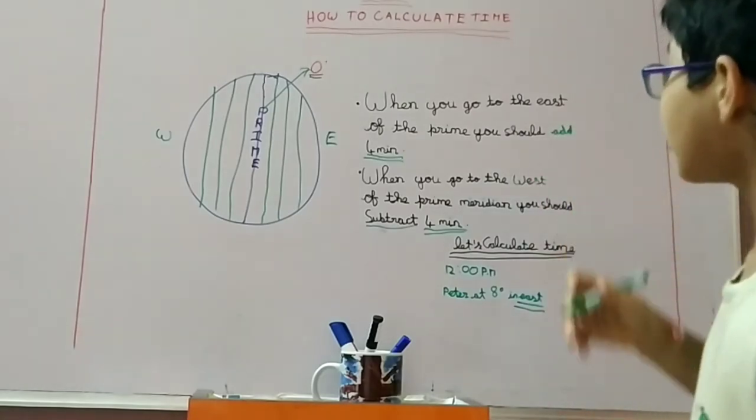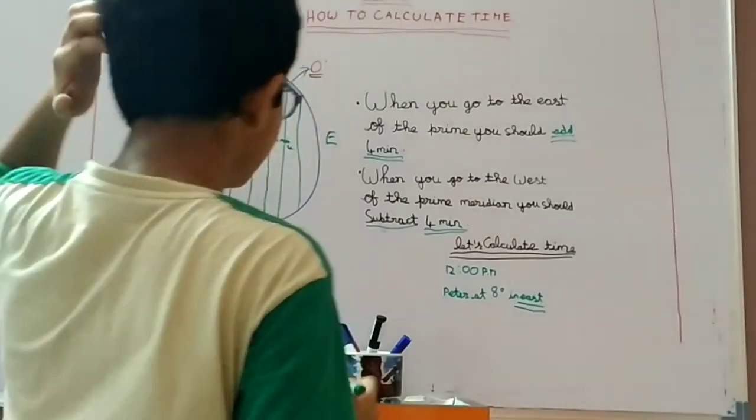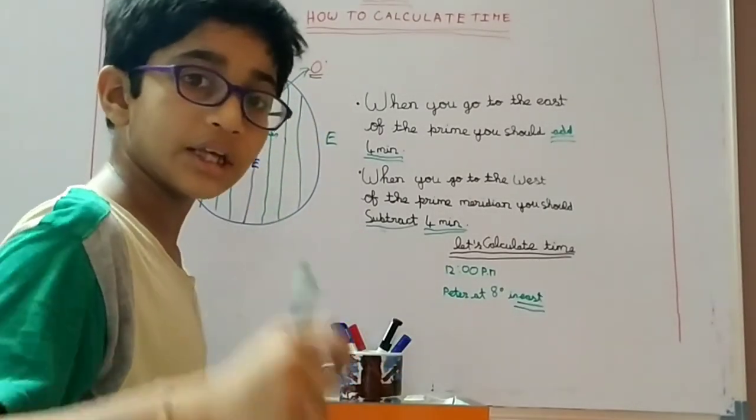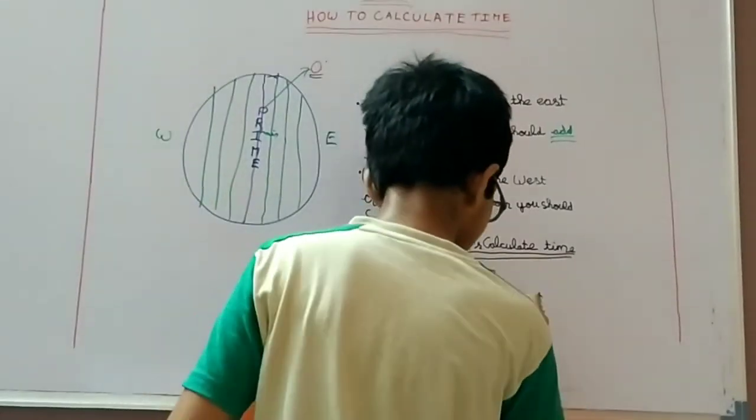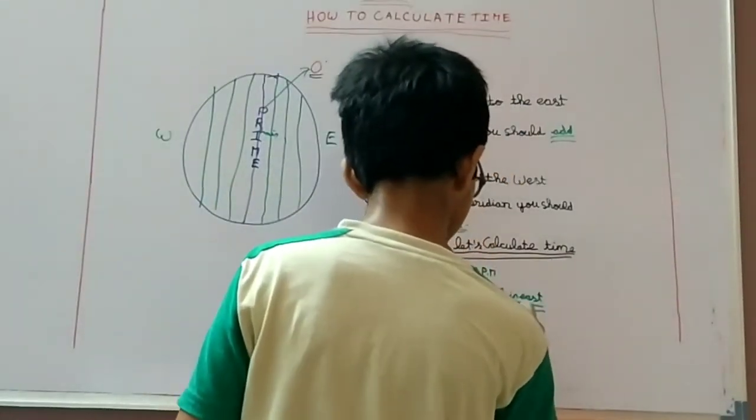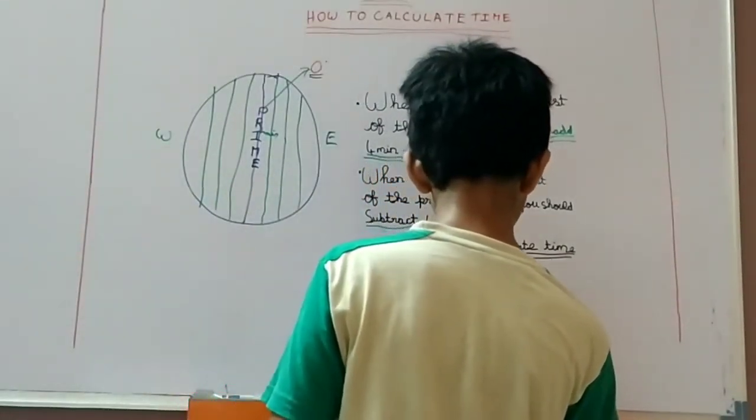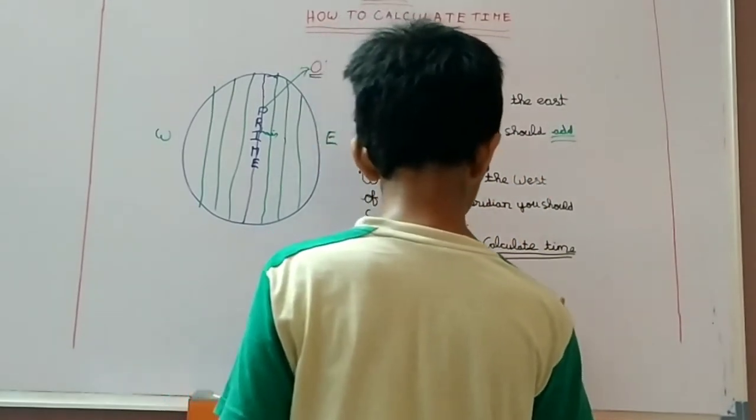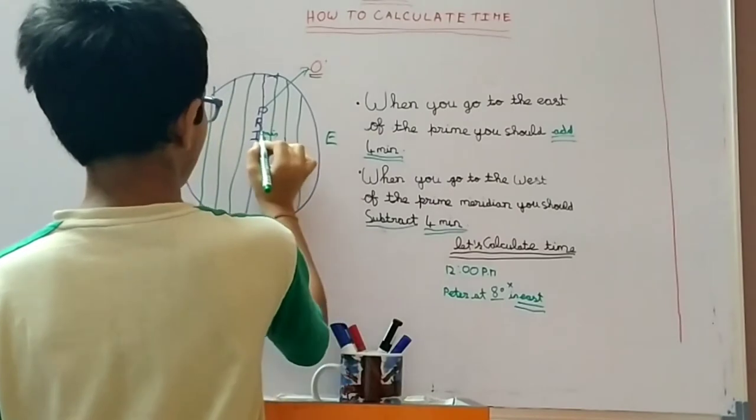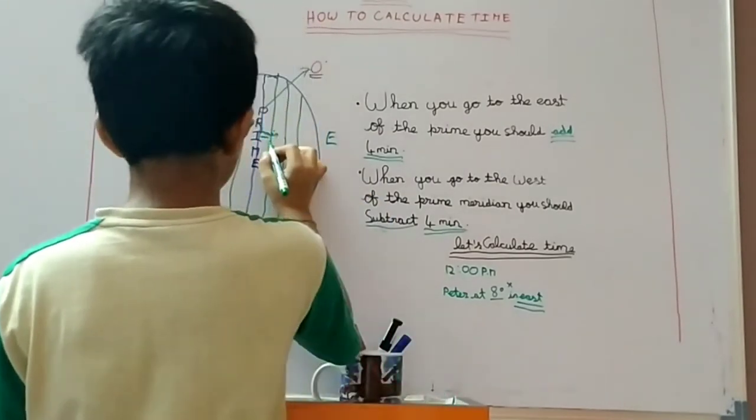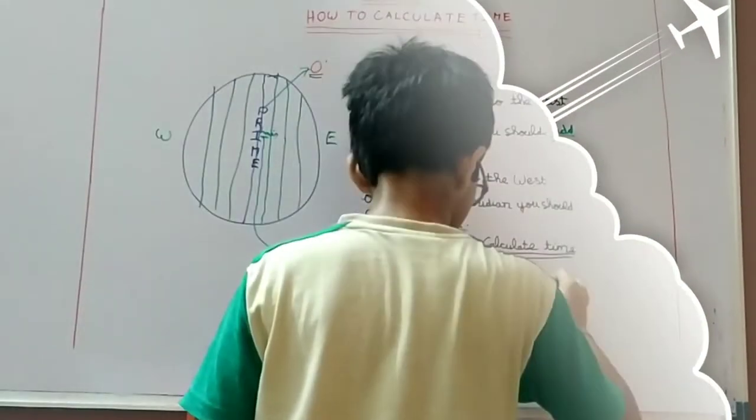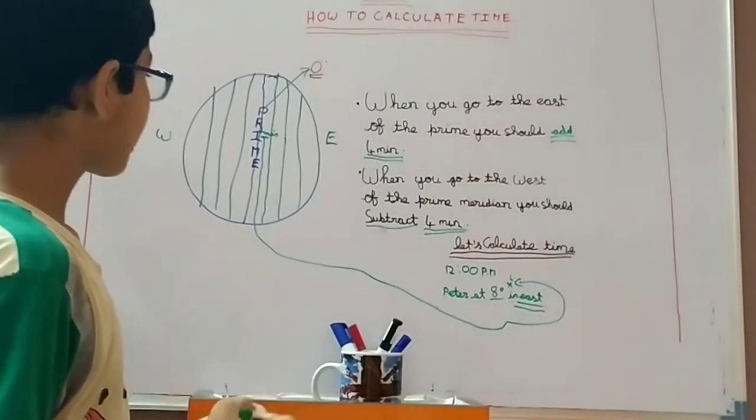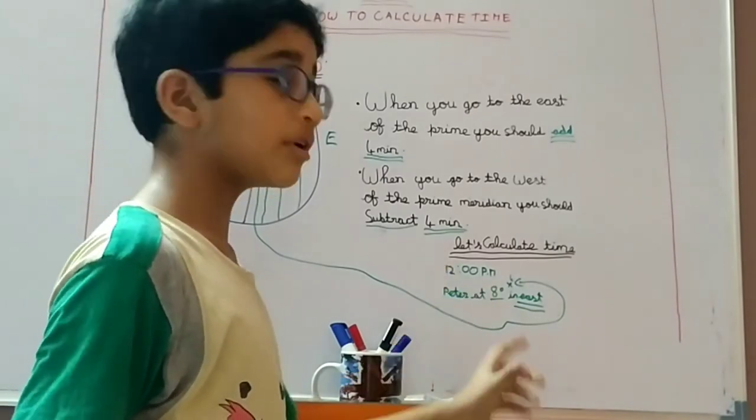What did I do? You should add four minutes. So it's four. The answer will be eight multiplied by four. You should multiply by four.